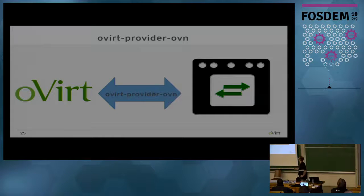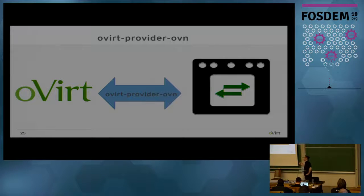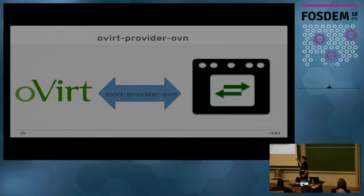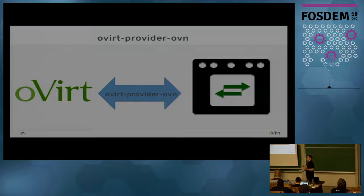What we decided to do is create a project called ovirt-provider-ovn. What it does is act as an adapter from oVirt to OVN — an OVN adapter for the OpenStack Networking API.